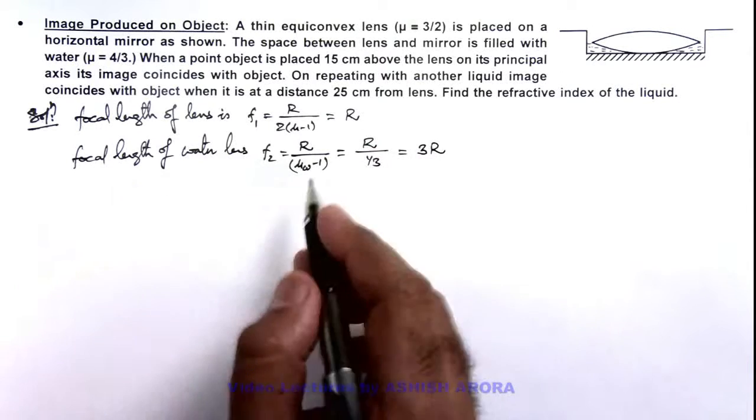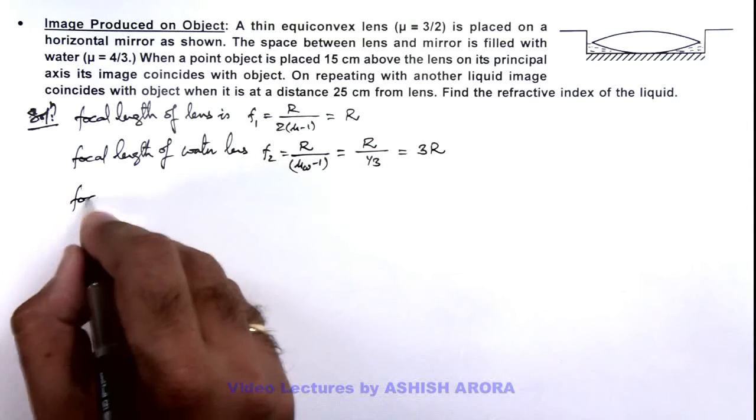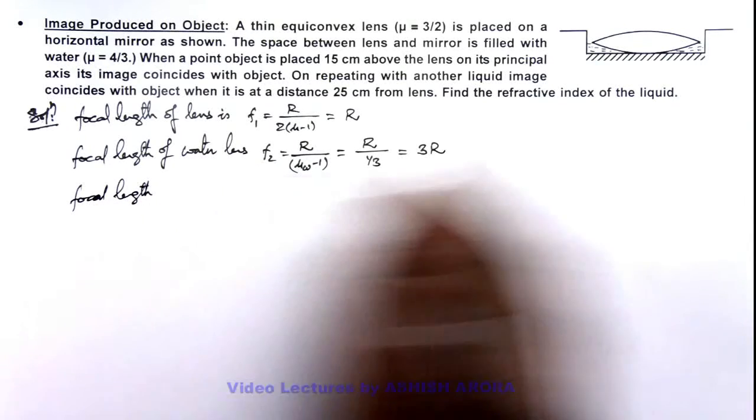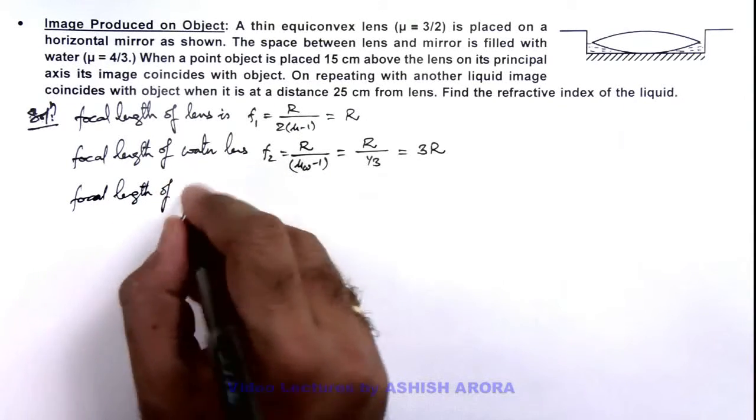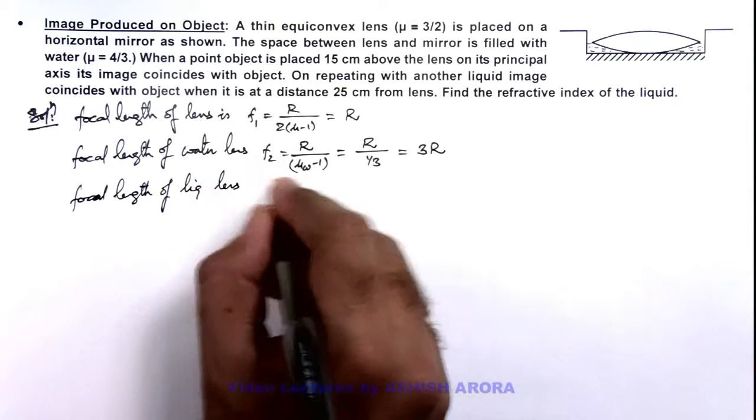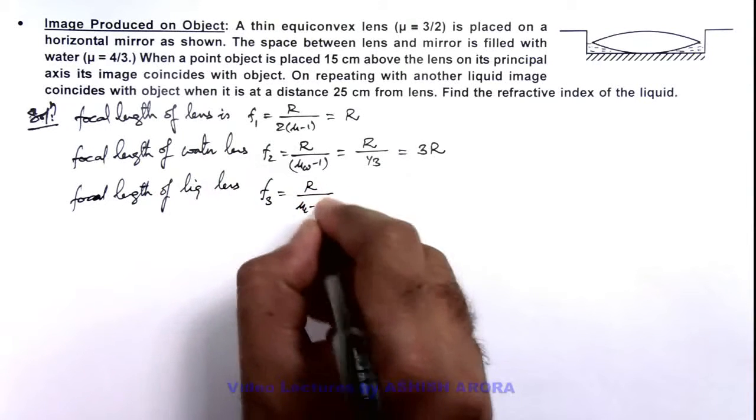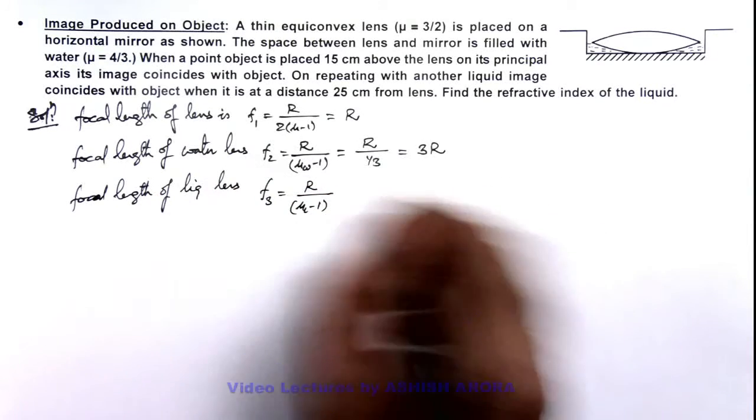And if we calculate the focal length of the liquid lens which is replaced instead of water in second case, then the focal length of this liquid lens f3 can again be written as r by μ of liquid minus 1. This can be taken as it is.